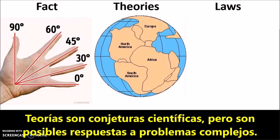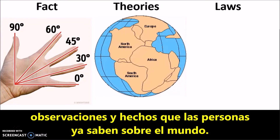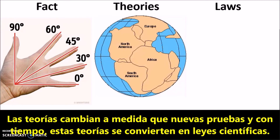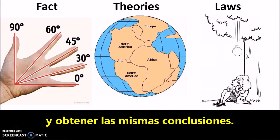Theories are scientific guesses, but are possible answers to complex problems. Theories are not necessarily correct, but theories are explanations developed by using both observations and facts that people already know about the world. Theories change as new evidence is found, and eventually these theories become scientific laws. A scientific law exists only when many scientists repeat the experiment and get the same conclusions.